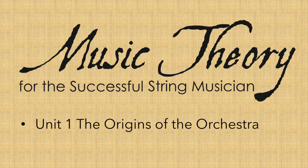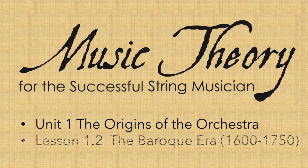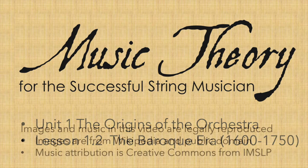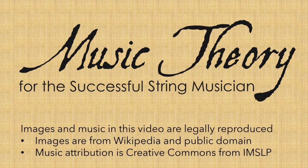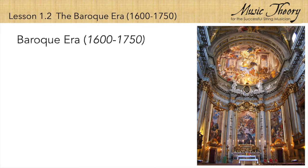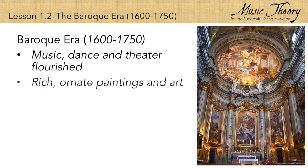Hello, everyone. In this lesson about the origins of the orchestra, we will be looking at the types of music that appeared during the Baroque era. Music and many other art forms began to flourish between 1600 and 1750, during a time we now call the Baroque era.